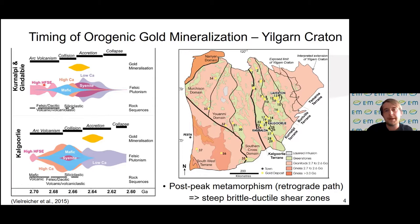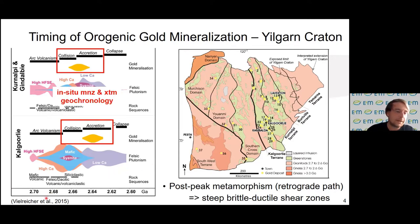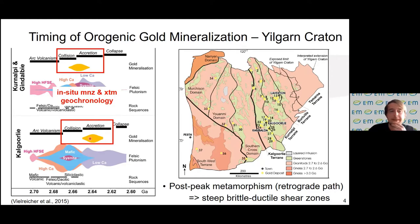Both volcanic and intrusive units are later covered by sedimentary rocks, and all of these rocks find themselves within the deformational periods attributed to the Kalgoorlie Orogenic cycle. What Noreen Phillreich and others found through in-situ monazite and xenotime geochronology is that most of the gold associated with these steep brittle-to-ductile shear zones is constrained to a rather narrow period of time, placing it post-peak metamorphic conditions along the retrograde path of the Kalgoorlie Orogenic cycle.